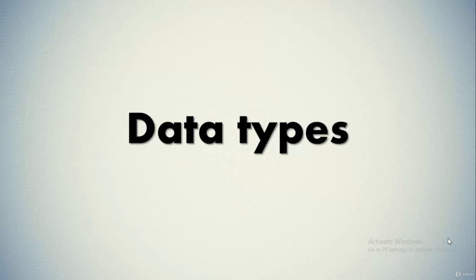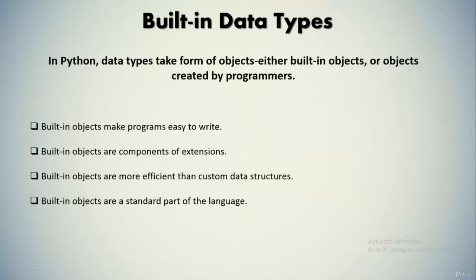Hello everyone. In this video we'll discuss Python's data types. Every value that you have in Python has a particular data type associated with it. Since everything is an object in Python programming, data types are actually classes, and variables are instances — that is, objects — of these classes.